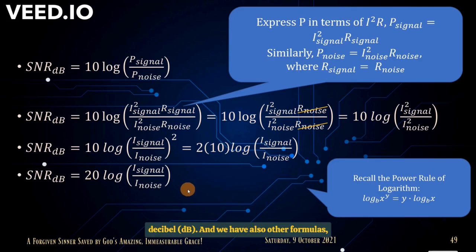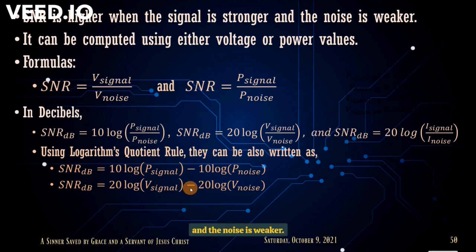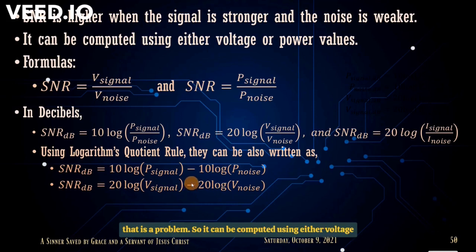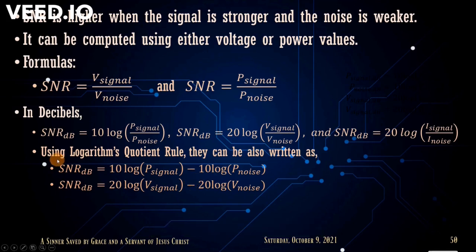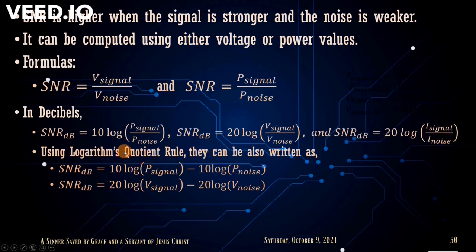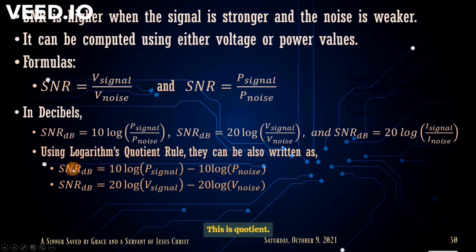There are also other formulas for computing SNR. We can use the quotient rule of logarithms: log(a/b) = log(a) − log(b), so the SNR formula can be written as a subtraction of logarithms. When it is a quotient, that becomes subtraction; when it is a product, that becomes addition.